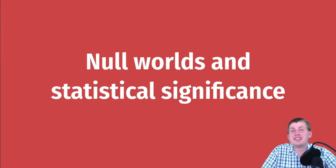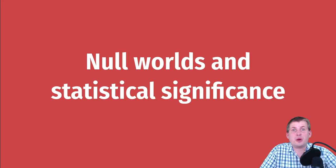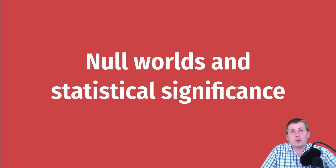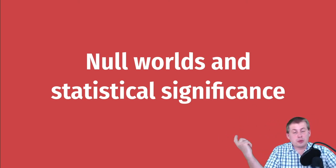We need to review one last concept from past stats classes: statistical significance. This is something you hopefully covered — you always write about it in reports. You see things called p-values and have to remember whether the p-value is supposed to be greater than or less than 0.05. We're going to explain what significance means in this world of Greek letters we've been talking about.